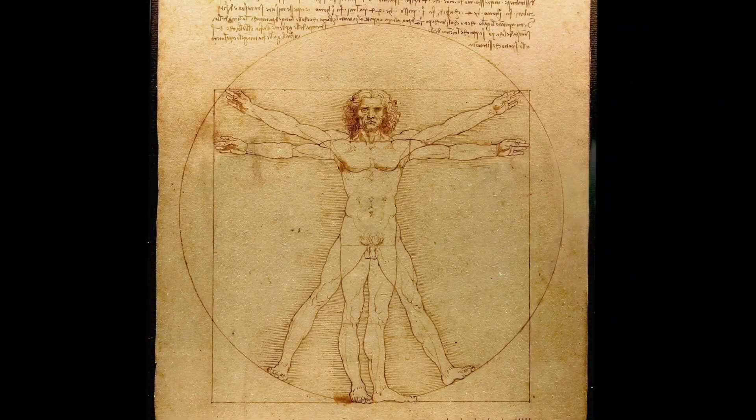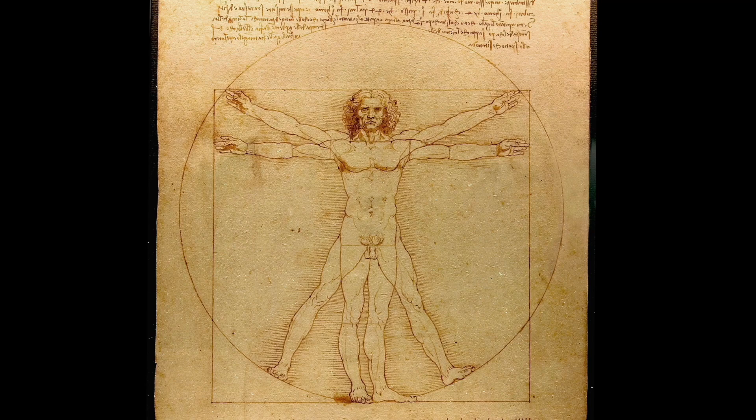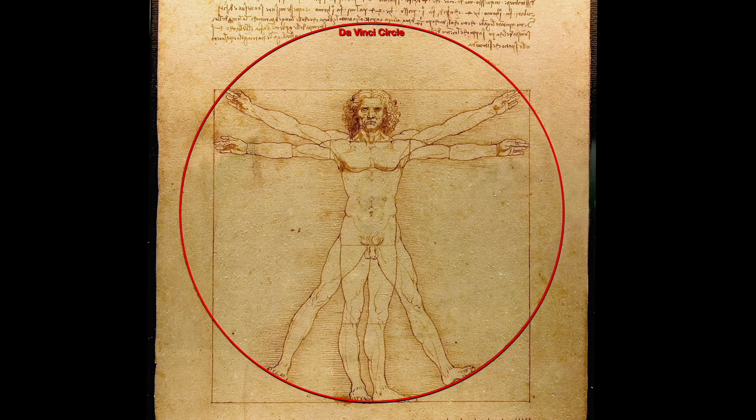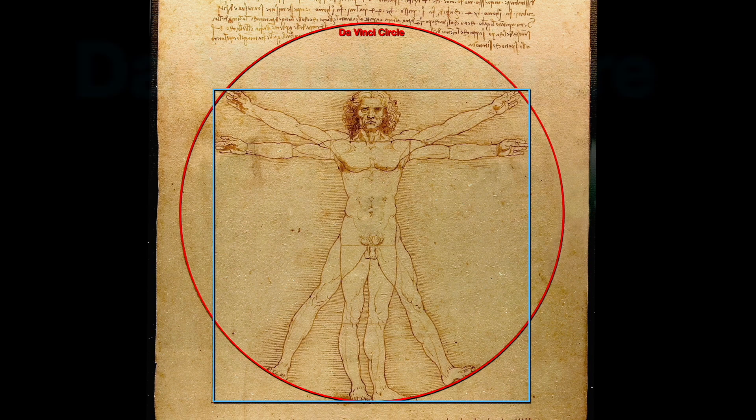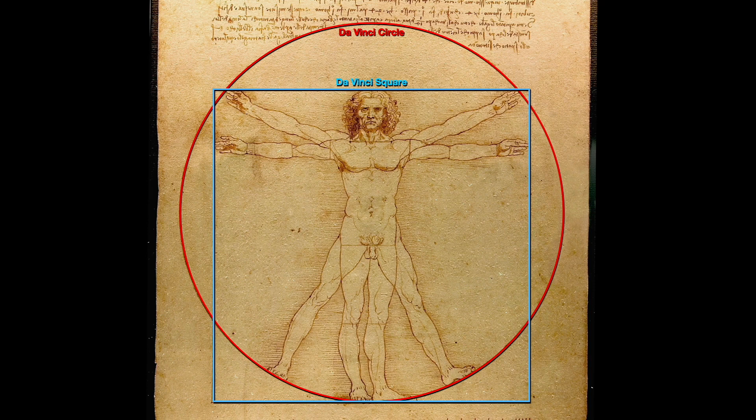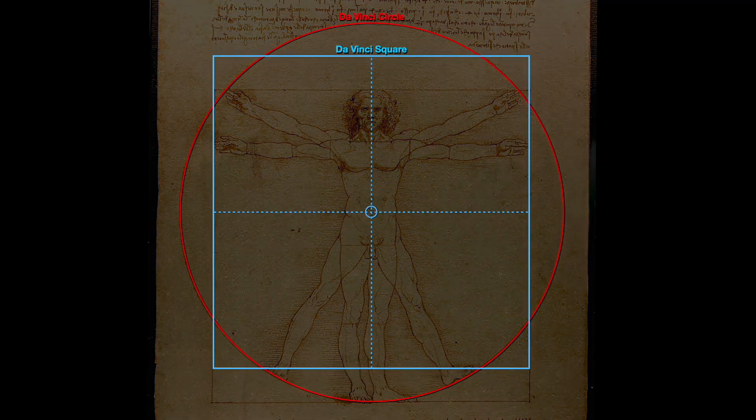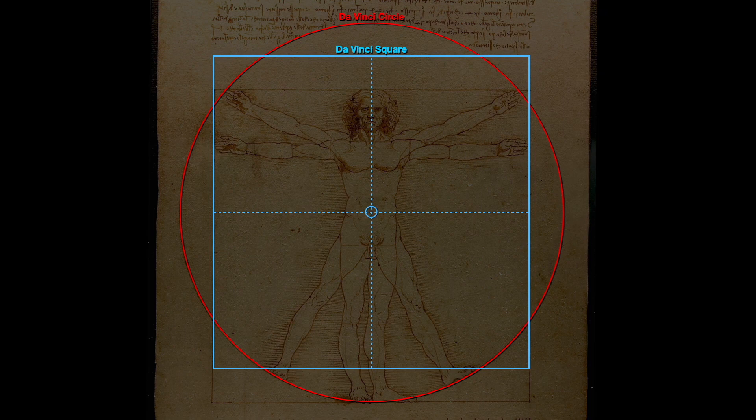Leonardo da Vinci's Vitruvian Man has mystified mankind for centuries. The position of his circle does not match the position of his square in the normal way of squaring the circle. By raising the square so that its center is at the navel, many mysteries are resolved.